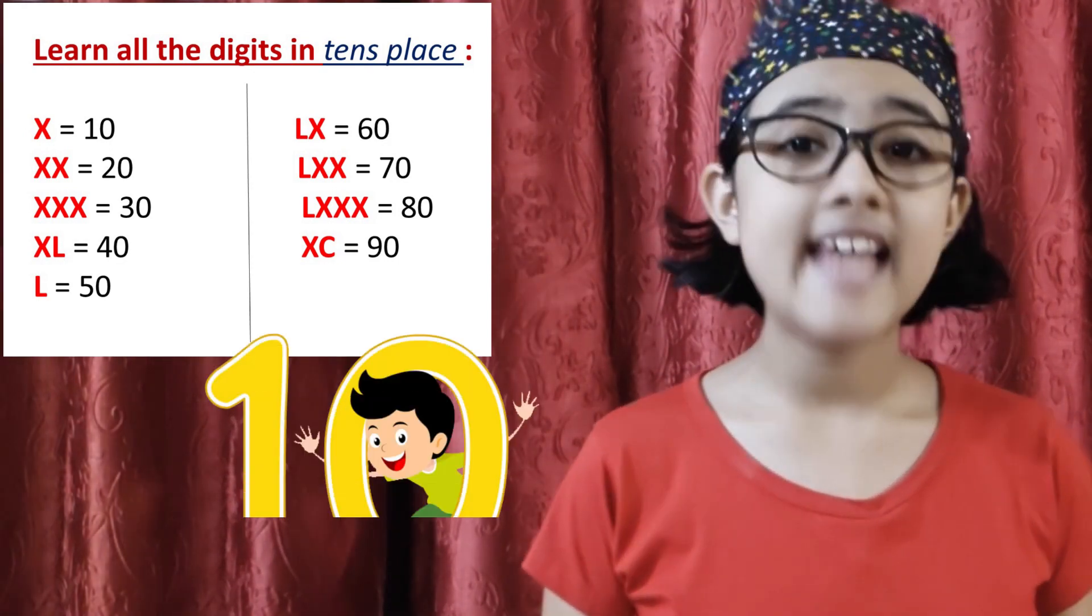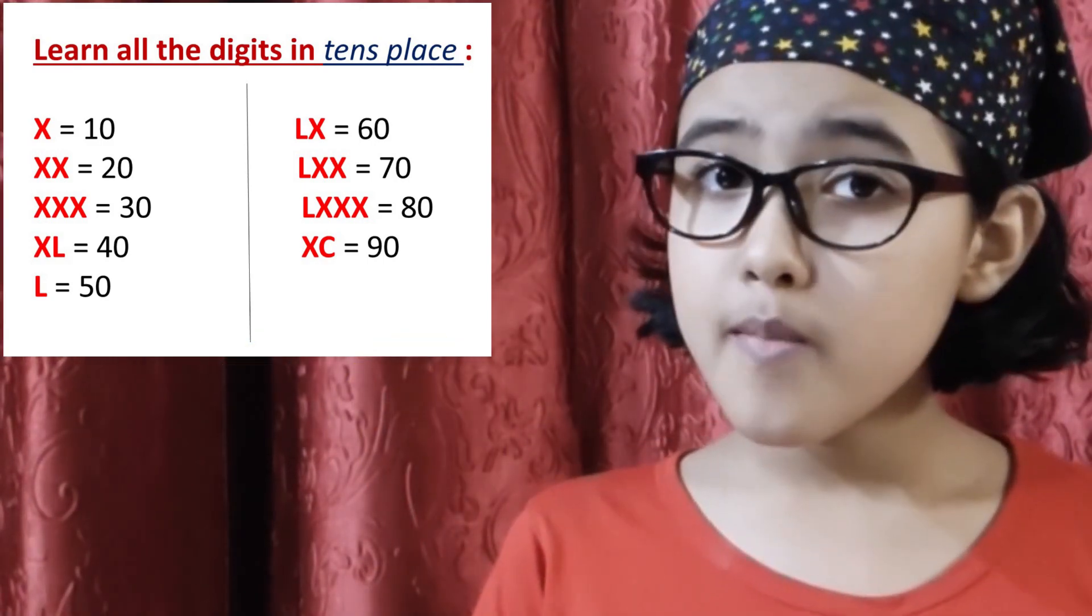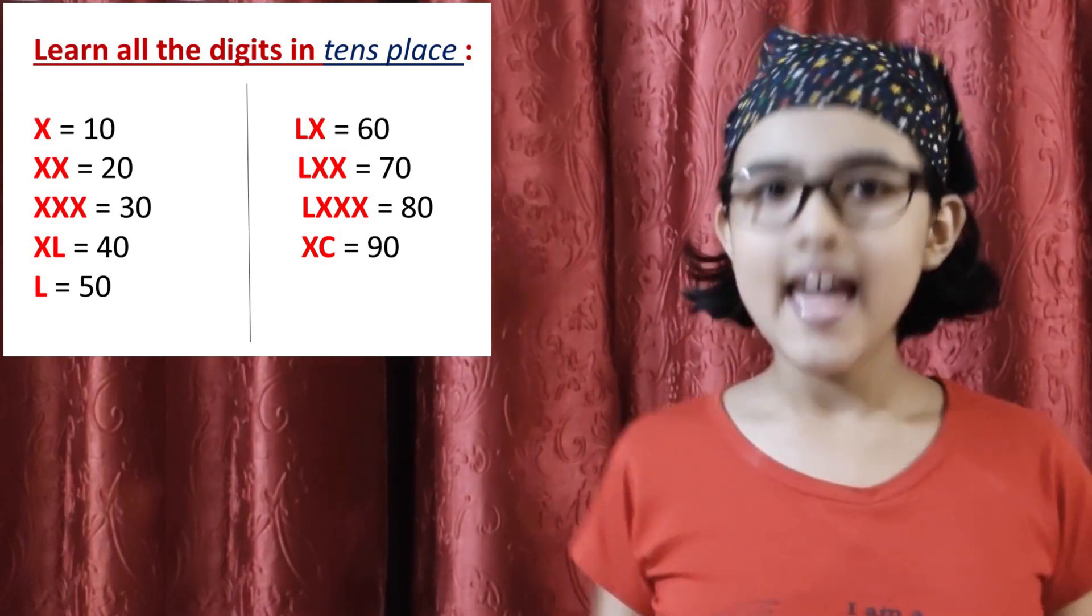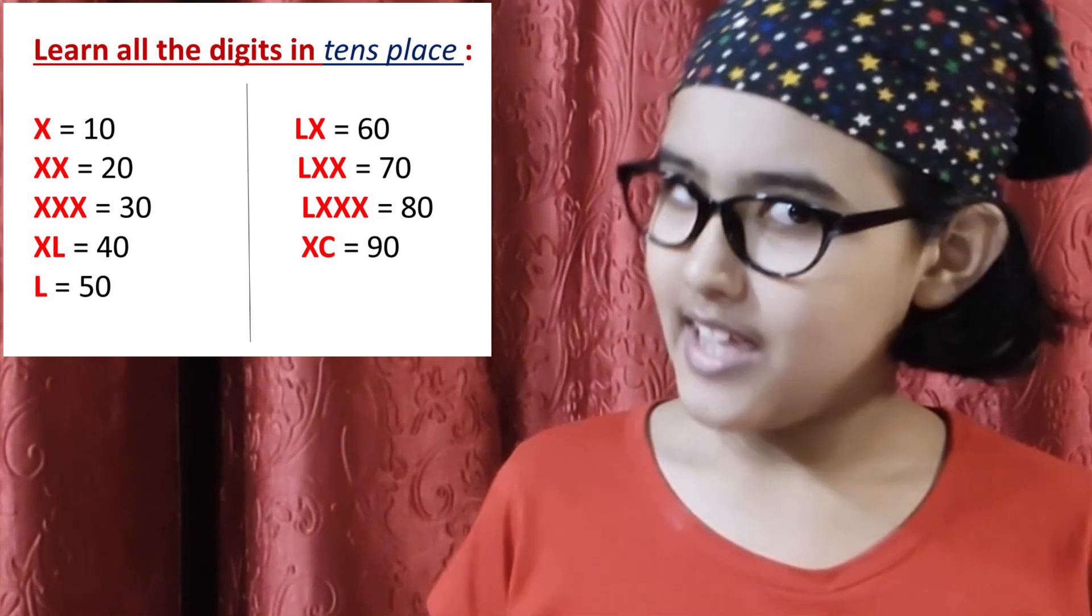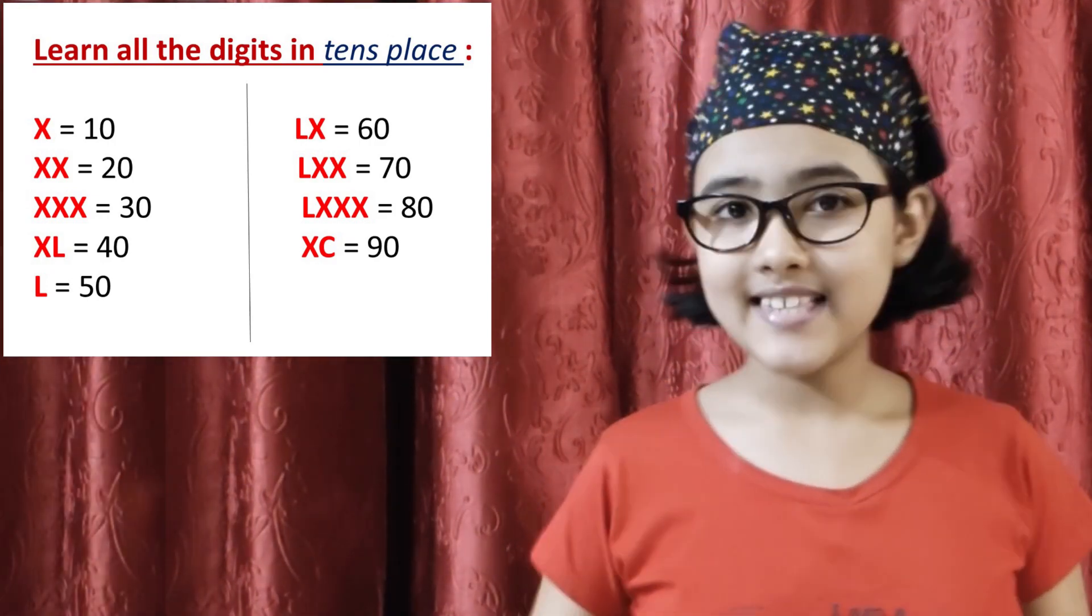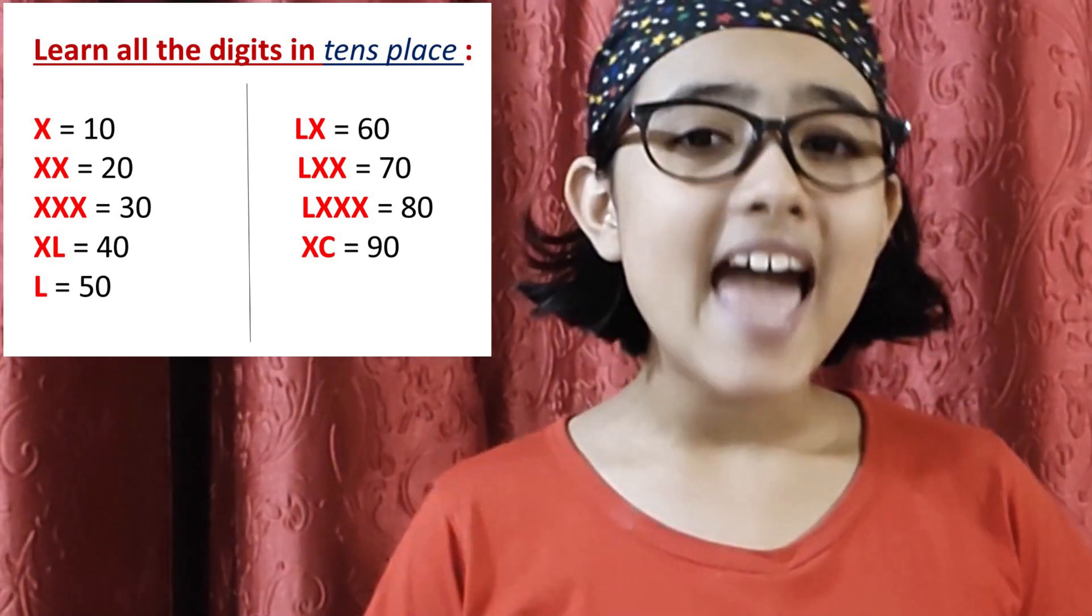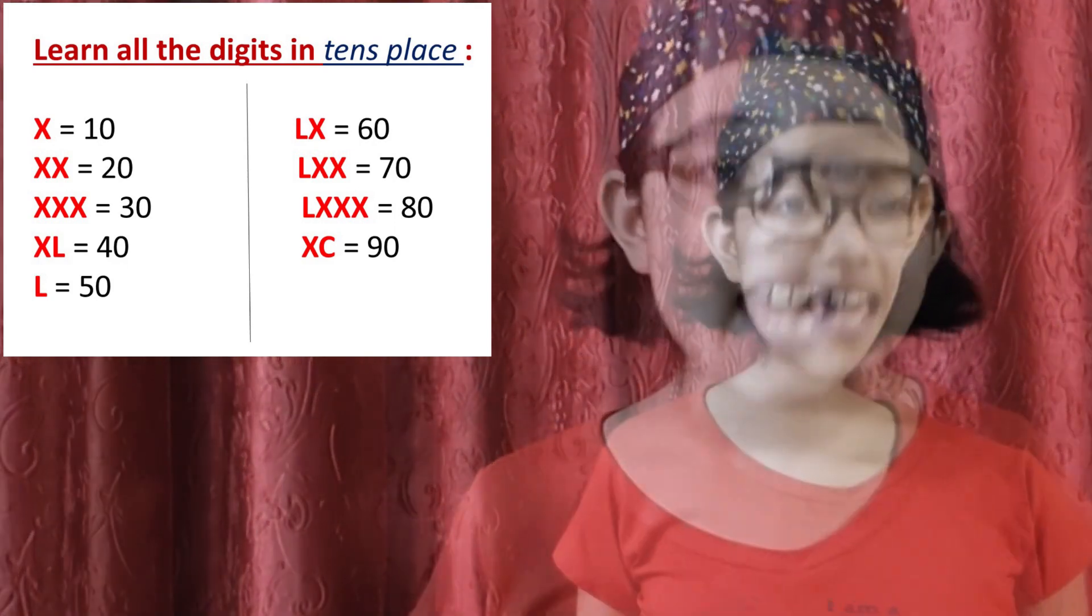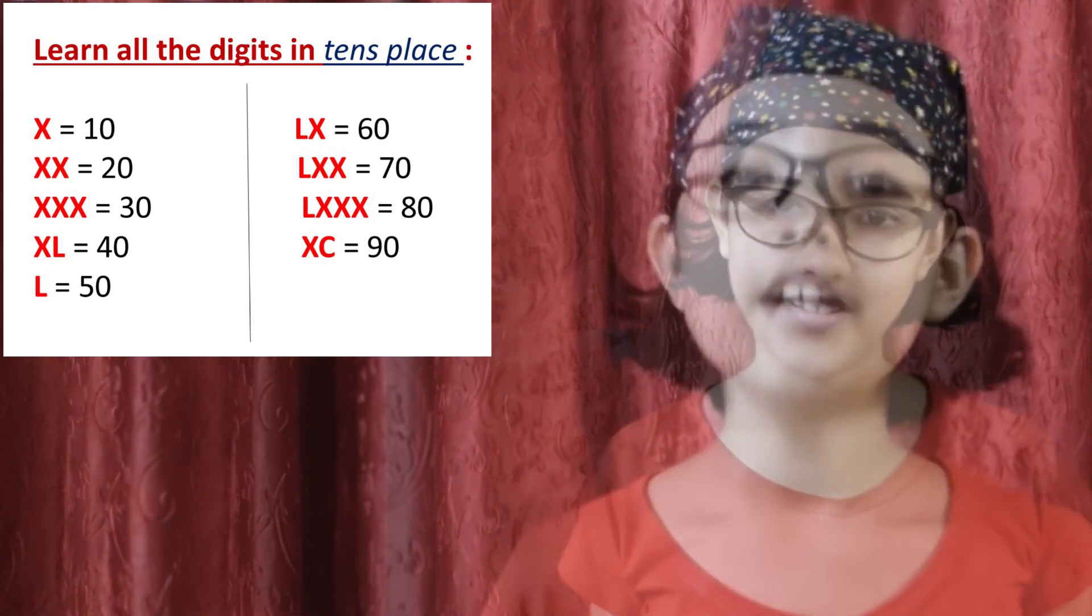Let's go ahead with tens place digits. X is 10, XX is 20, XXX is 30, XL is 40, L is 50, LX is 60, LXX is 70, LXXX is 80, and XC is 90.